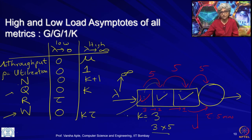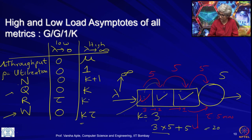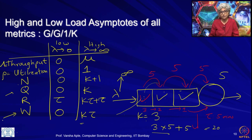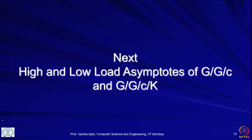Now that we know the high load asymptote of the waiting time, response time is straightforward: it is waiting time plus service time. So response time goes to k*tau plus tau as lambda tends to infinity. These were the high and low load asymptotes for GG1k, and we will continue with GGck in the next lecture.